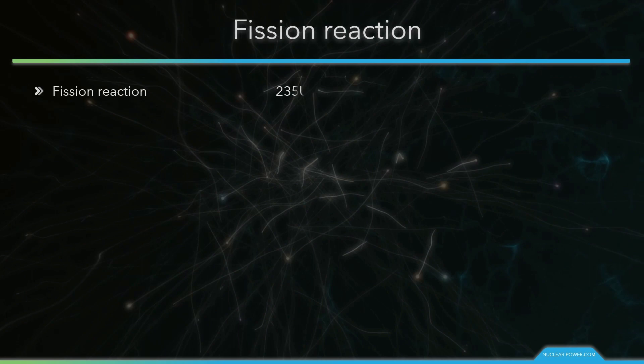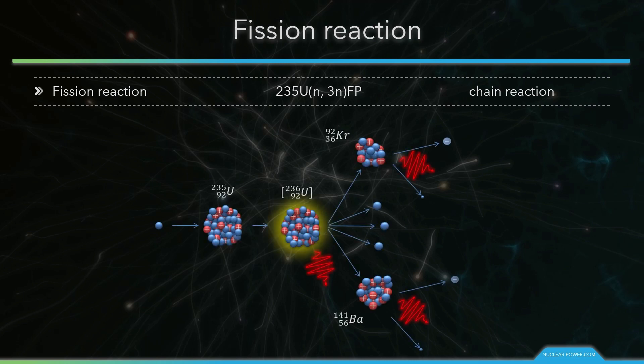Nuclear fission is a nuclear reaction in which the heavy nucleus splits into smaller parts. The fission process often produces free neutrons, photons, and releases a large amount of energy. The mechanisms of this reaction will be described in detail in the next videos.